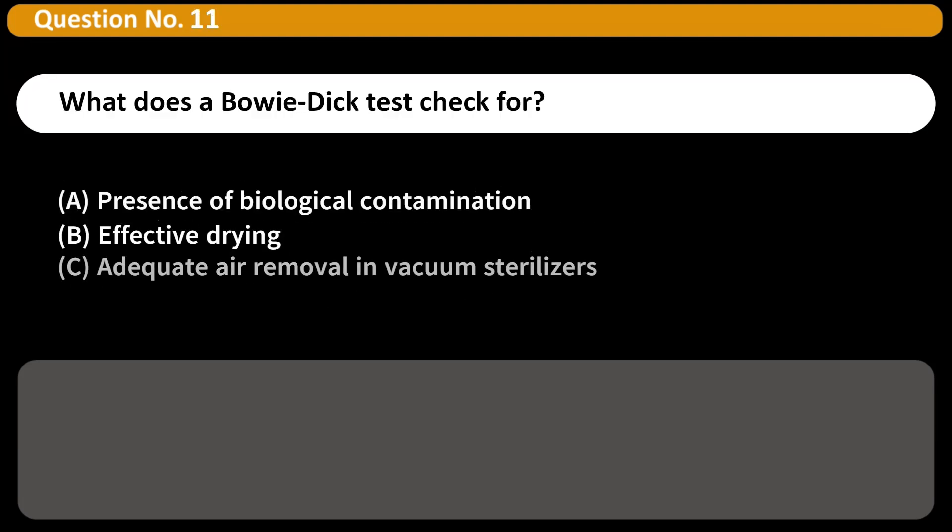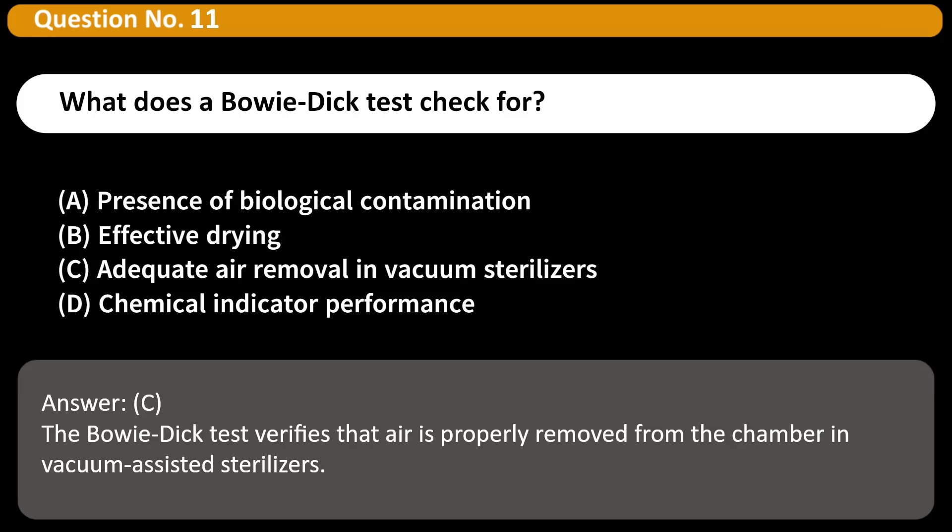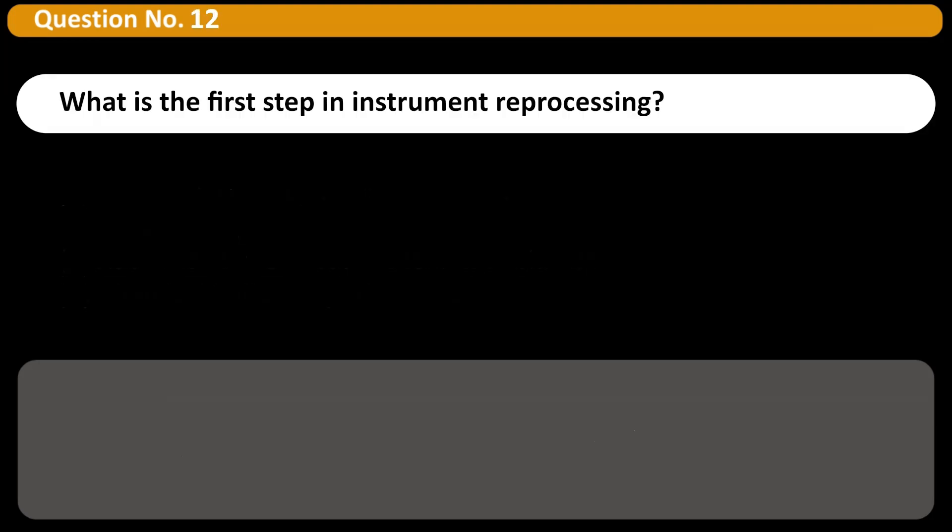What does a Bowie-Dick test check for? A. Presence of biological contamination, B. Effective drying, C. Adequate air removal in vacuum sterilizers, D. Chemical indicator performance. Answer C. The Bowie-Dick test verifies that air is properly removed from the chamber in vacuum-assisted sterilizers.